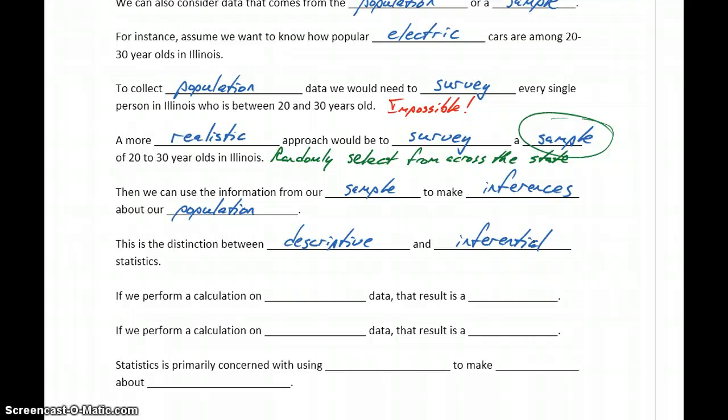If we perform a calculation on population data, so if we did go out and collect data on every single person in Illinois, or if in some other scenario we did have population data, that result, if we found an average for instance, we would refer to that result as a parameter. Parameters tell us something about the entire population.